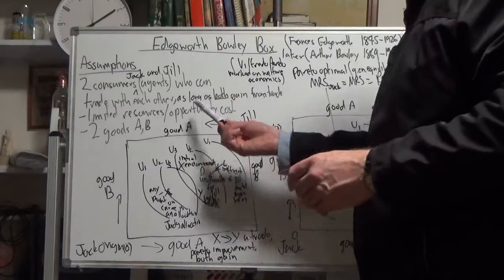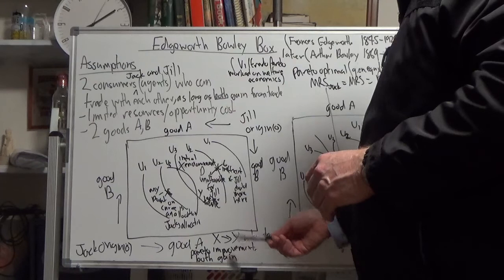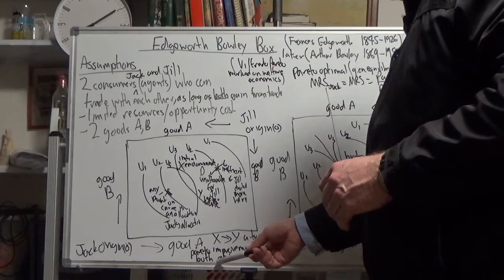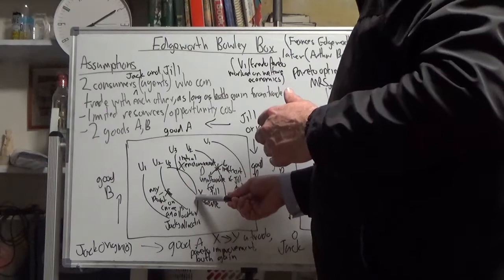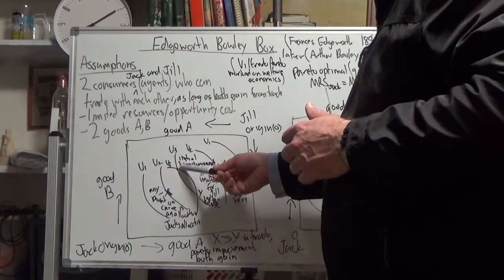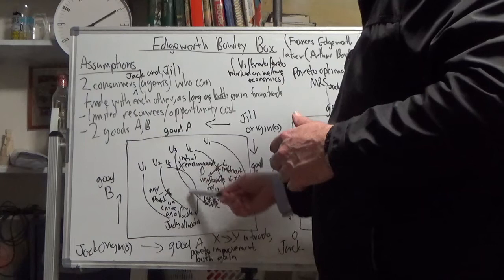That's termed a Pareto improvement. If they go from X to Y and both agents gain from the trade, a Pareto improvement. After the trade they finish up at Y. That's after the trade, that's the initial endowment, that's the point after the trade Y. From X to Y, initial endowment to after the trade.